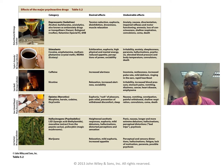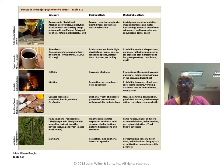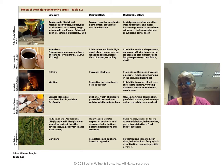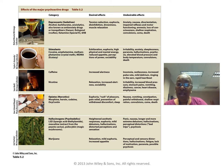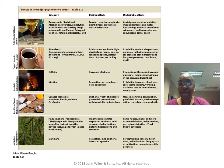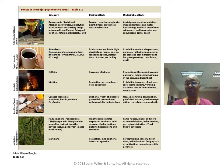Marijuana is a psychedelic that has been used for a long time and has demonstrated many medical benefits through its THC content, which is why some states have legalized it. Mississippi has been considering legalizing medical marijuana because it can help with glaucoma, cancer, and severe pain, though it has not been legalized there yet.